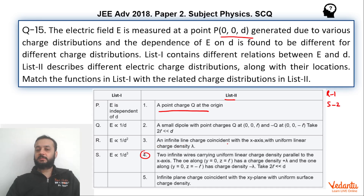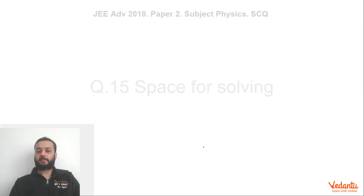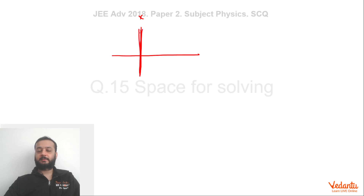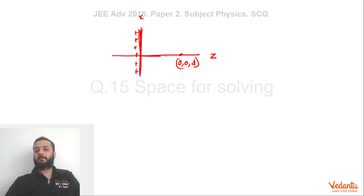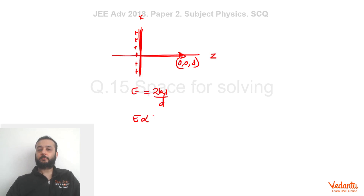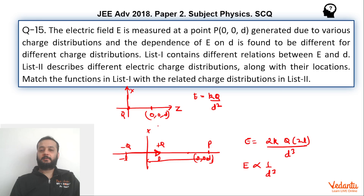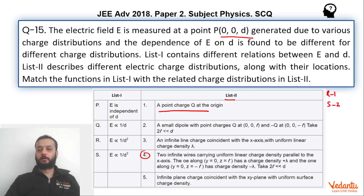Now, if you talk about an infinite line charge coincident with the X-axis with uniform linear charge density lambda — if this is the X-axis, we have infinite line charge along it. We have to find the electric field at point (0, 0, D). The electric field at this point will be in the radially outward direction, and will be 2K lambda by D. Hence, electric field is proportional to 1 upon D. So option 3 matches with Q.